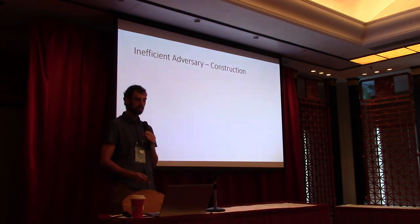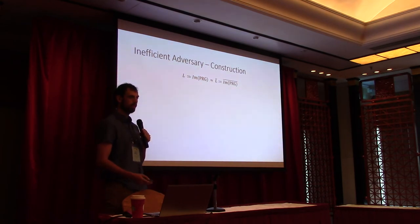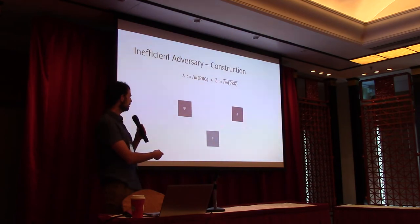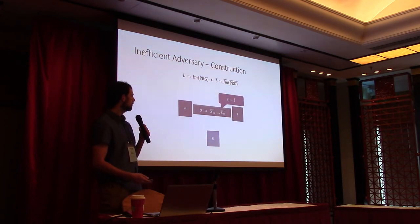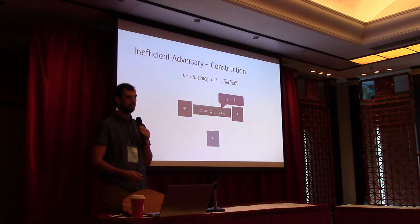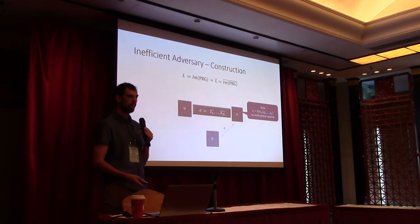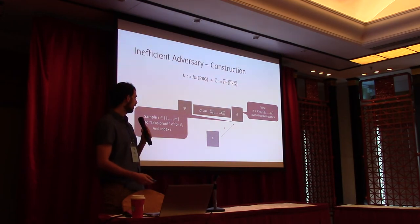At a high level, our construction defines two languages L and L-bar. L is simply the image of a pseudorandom generator, and L-bar is the complement. Since we assume this is a pseudorandom generator, L is indistinguishable from L-bar. Our adversary works as follows: the common string sigma is n independent samples of instances not in the language. The reduction sends encodings, and the adversary views these as encodings of a multi-prover protocol. The adversary samples an index between one and n, and sends a fake proof for instance x_i, x-bar_i — such a fake proof always exists.